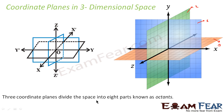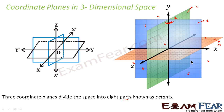These three coordinate planes divide the space into eight parts and they are called octants. This part is called part one, this part is part two, this part is part three and this part is part four. So there are four parts above and four parts below — five, six, seven and eight. There are eight equal parts and they are all called octants. So three dimensional space considers three coordinate planes and all these coordinate planes divide it into eight different parts.